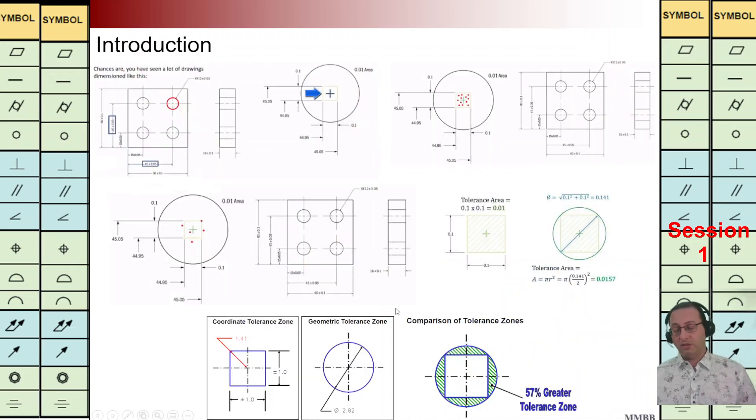Why we need GD&T? Here we have a plate. There are several holes here and for the position of this hole, the center of this hole we have tolerances. It is plus minus 0.05 for the center of this hole.